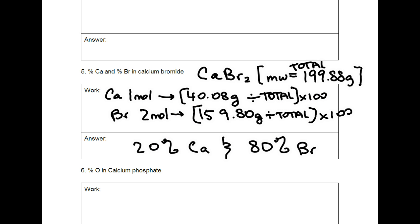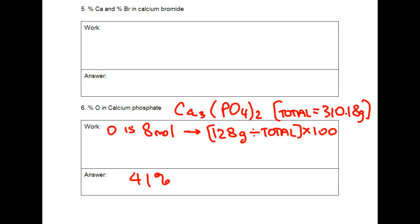For number 5, we have to know what calcium bromide is. We know the total molecular weight based off of 1 mole of Ca and 2 moles of Br. We find how much each of those weighs divided by the total multiplied by 100. And we should get 20 percent Ca and 80 percent Br.